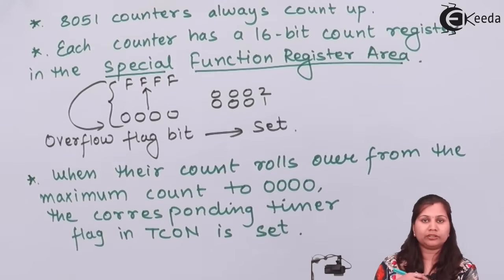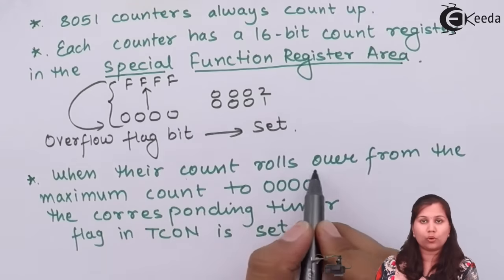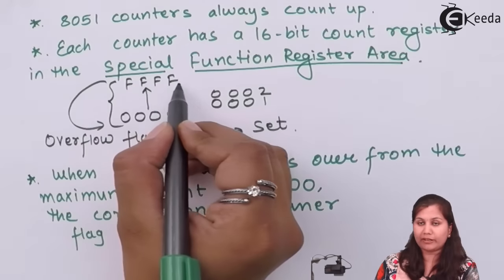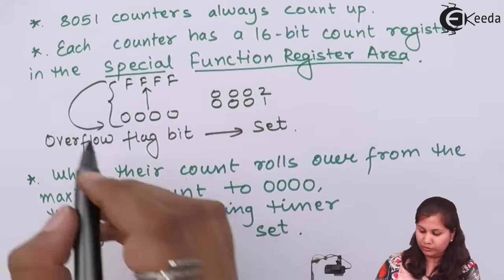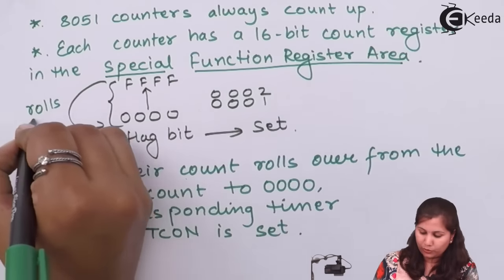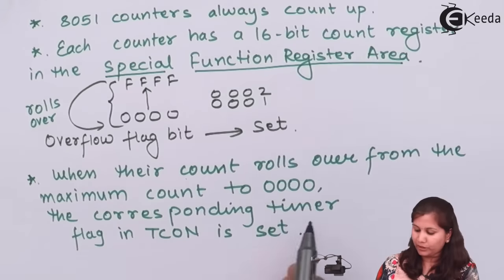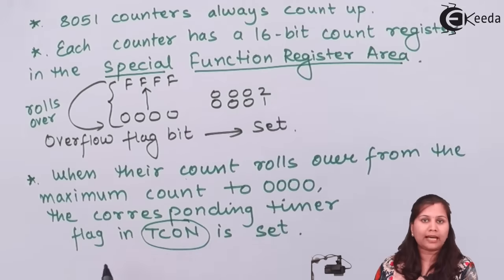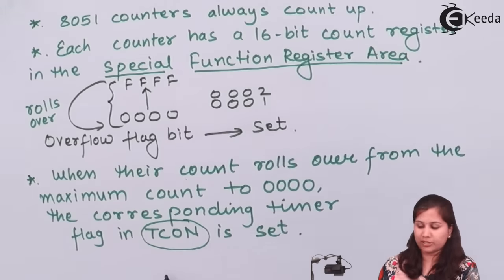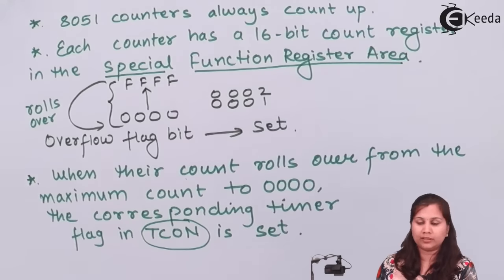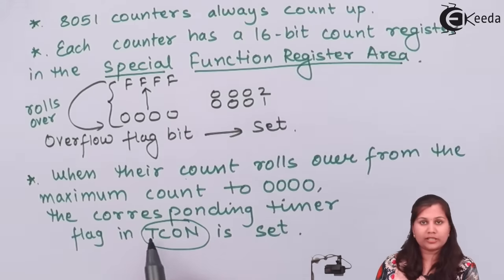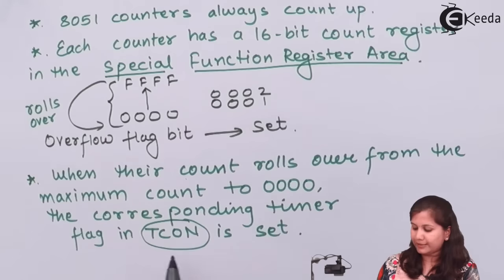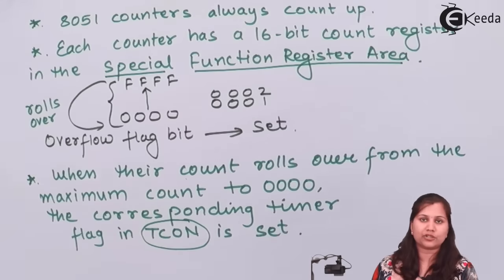Whenever the counter overflows, that is called the count rollover condition. Whenever the count rolls over from the maximum count FFFF back to 0000, the corresponding timer flag in the TCON register is set. TCON is the timer control register — it is an 8-bit register which has the flag bits for both timers. That flag is set whenever the overflow condition is achieved.